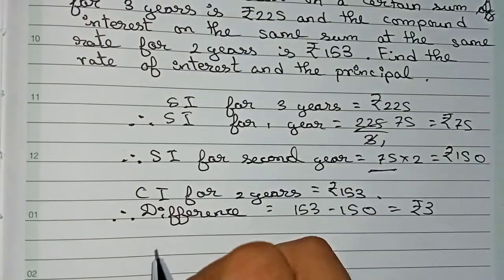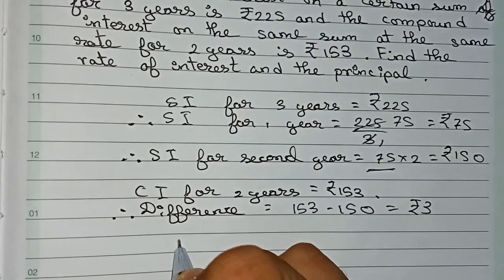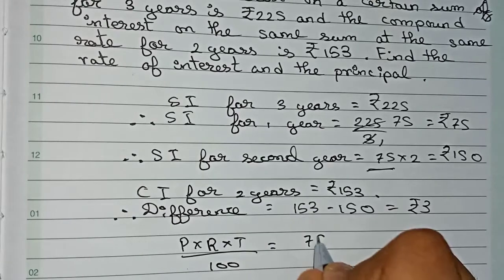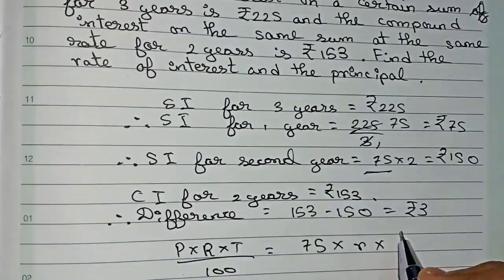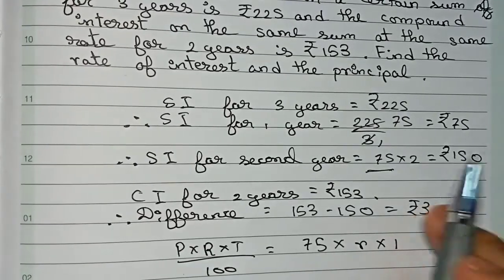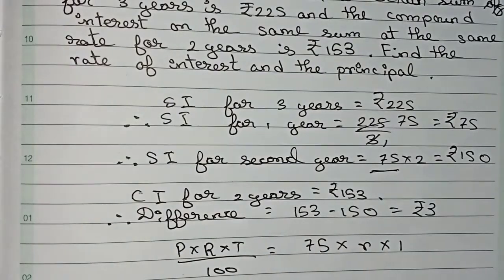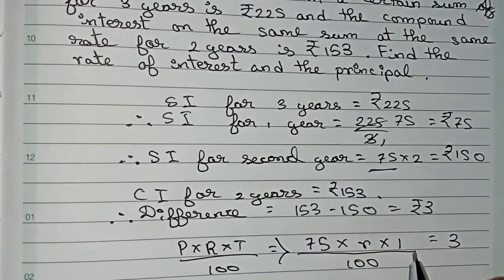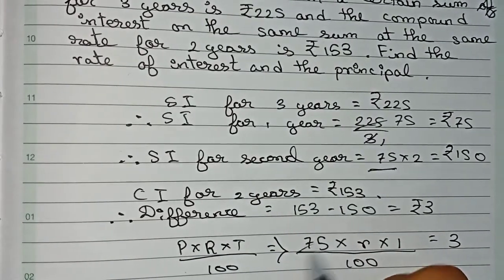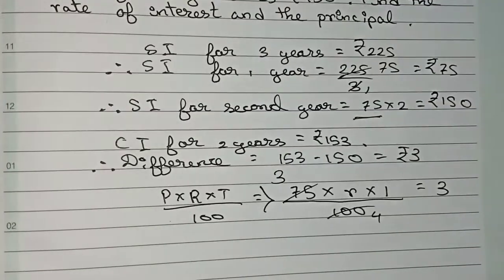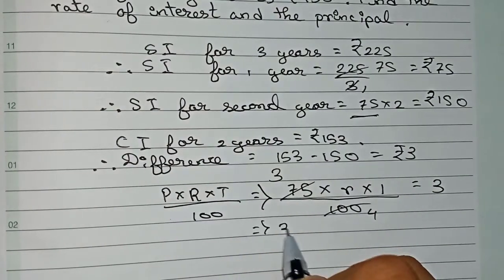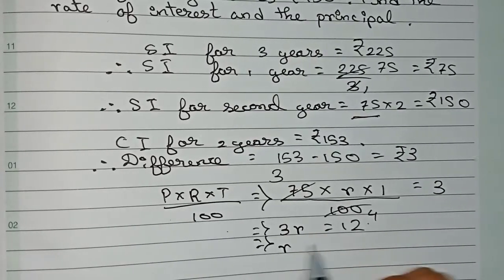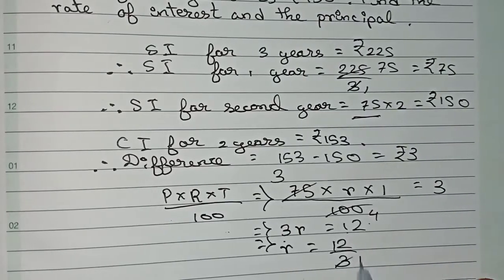We can write that P×R×T/100 = SI. Put down the values: 75×R×1/100 = 3. Between the first year and second year is a one year gap. Cutting 75 and 100 by 25, it becomes 3R/4 = 3. So 3R = 12, therefore R = 12/3 = 4.